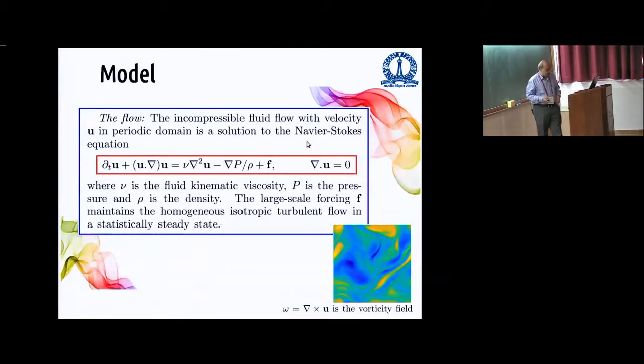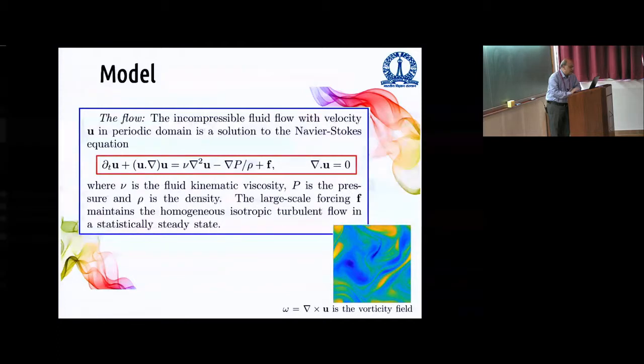So first, how do we get a flow? We get a flow by looking at the Navier-Stokes equations, which I have written here, incompressible flow. And standard notations, nu is the kinematic viscosity, p the pressure, rho the density, etc. Large-scale forcing. And the vorticity, omega, is curl of u. I show you a plot of the vorticity here in two dimensions.